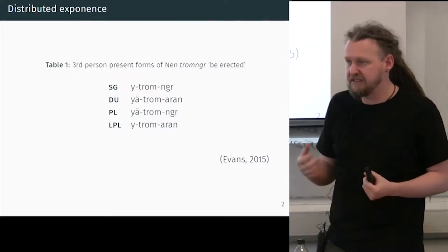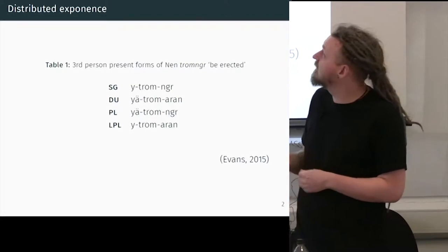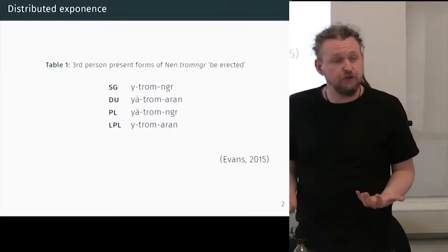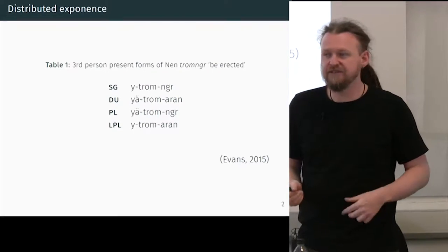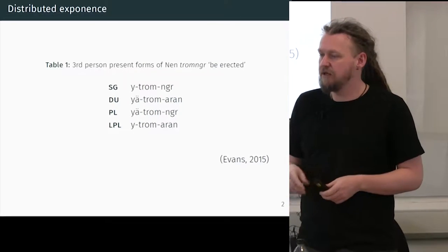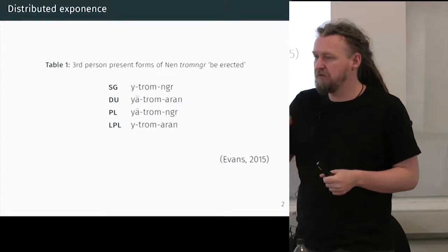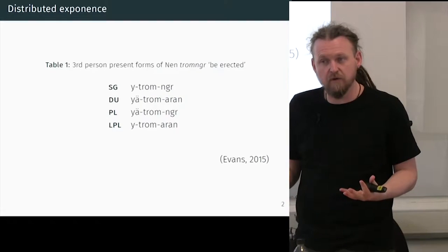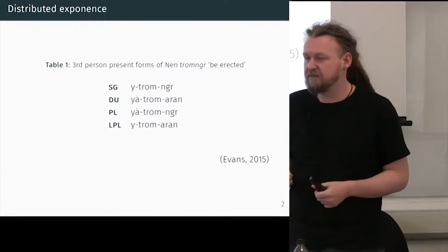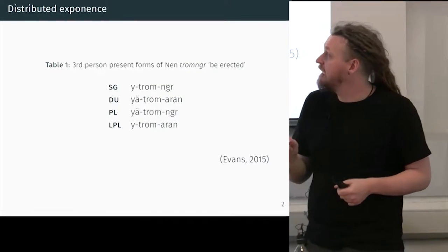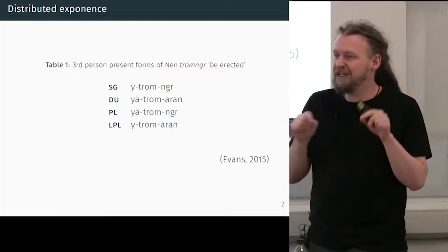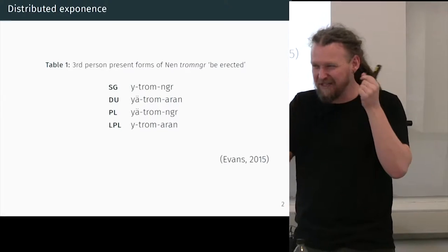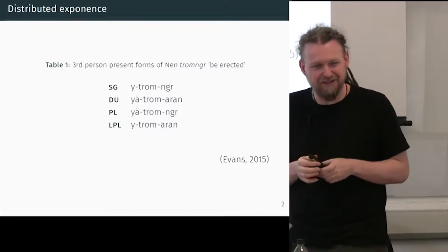It's not the only type of multiple marking, though. In a related but distinct phenomenon, you get something called what I'm calling distributed exponents. This is where you have multiple marking of a single category like we saw for multiple exponents, except in this case you need all of the elements to work out really what's going on.